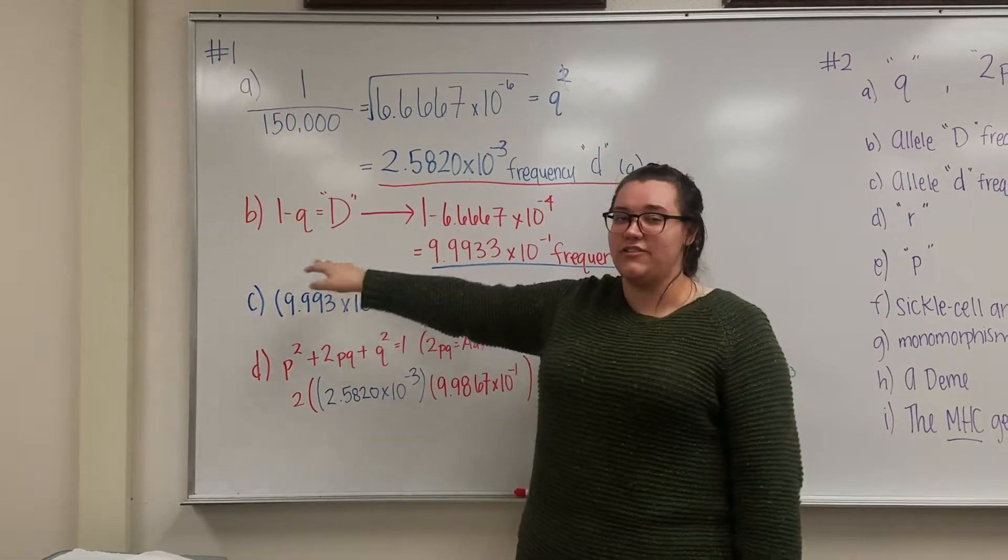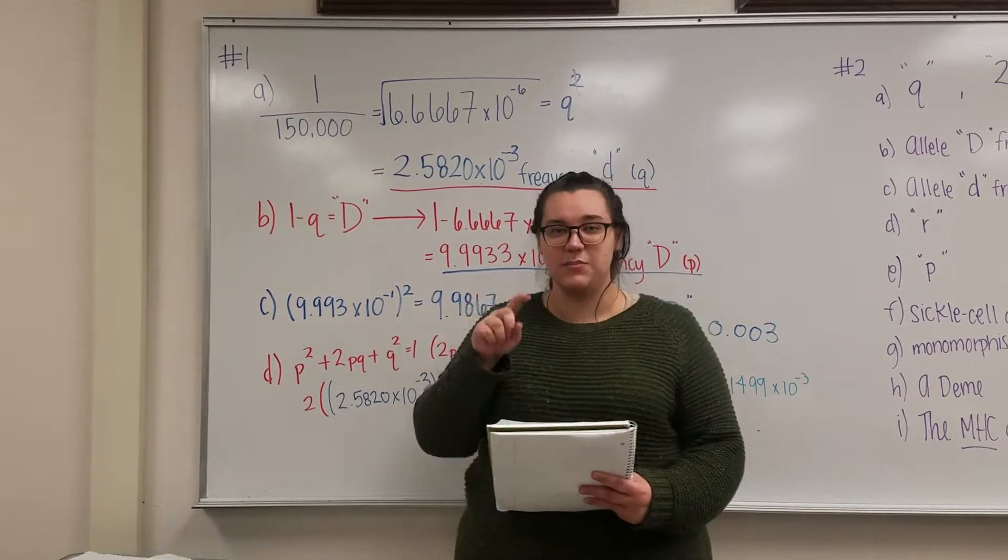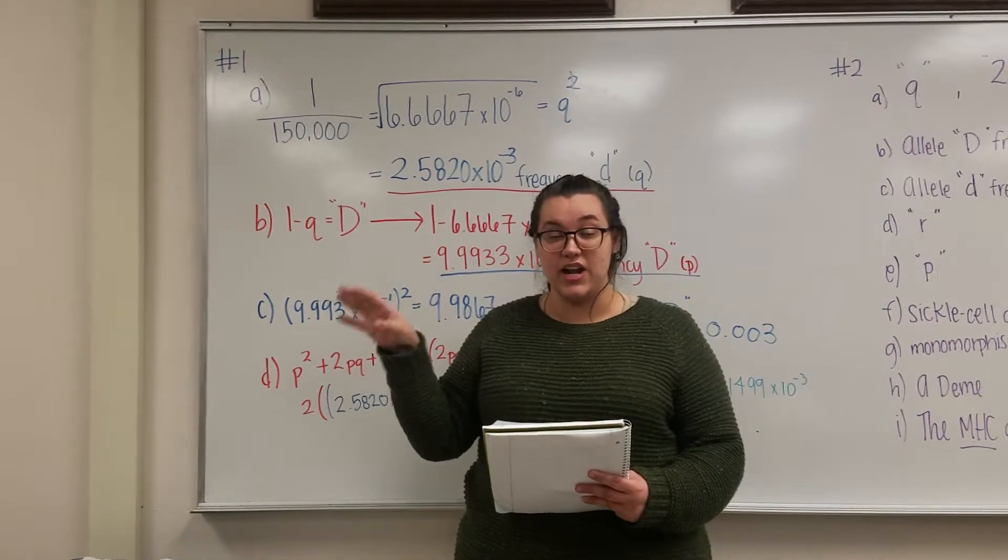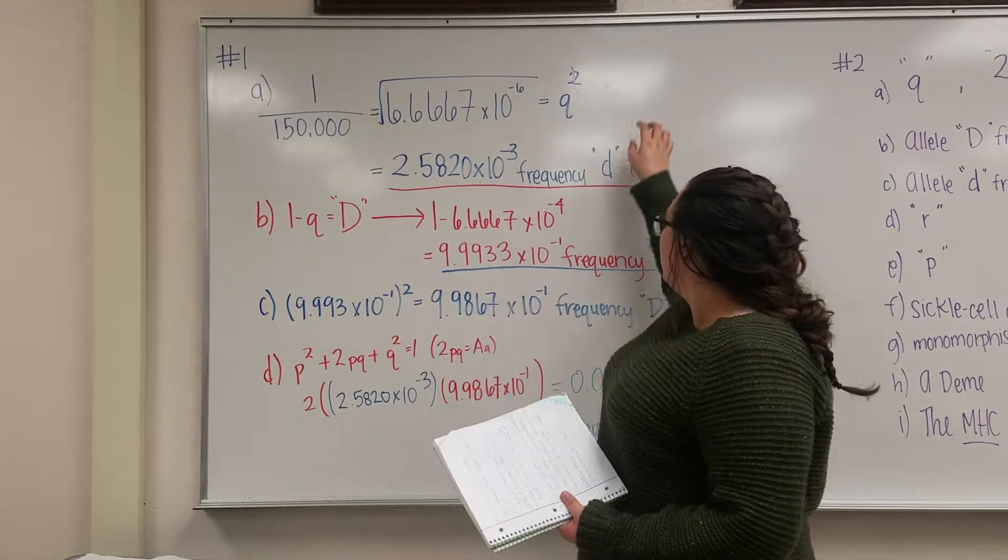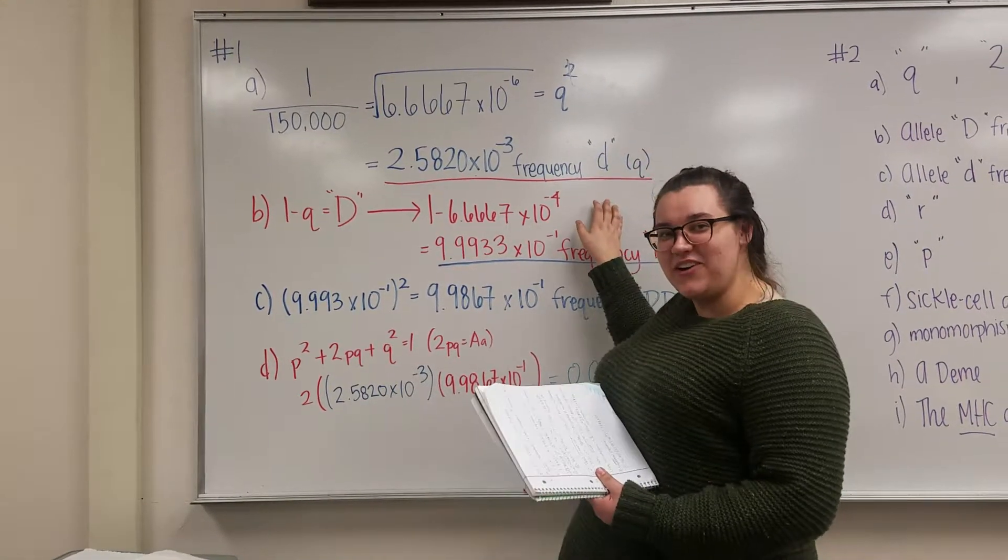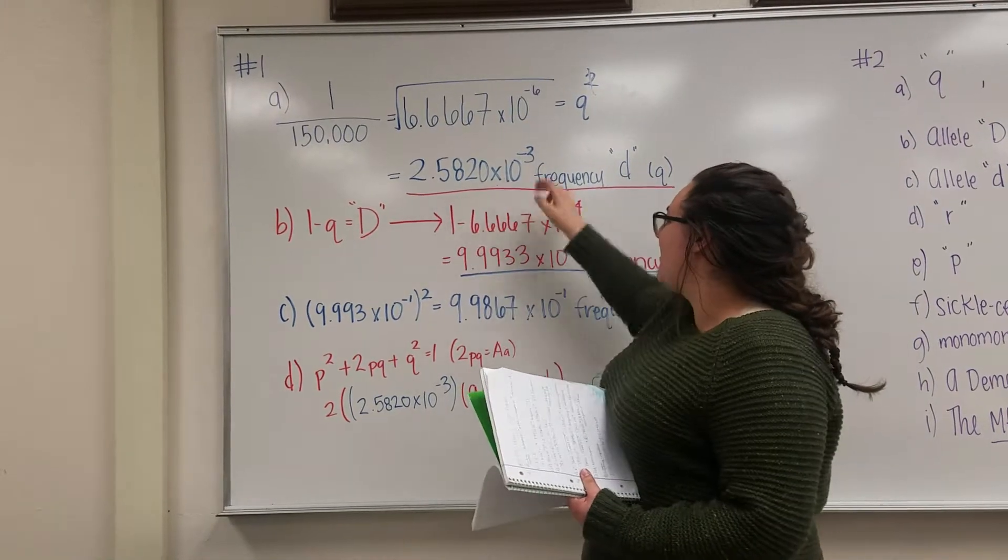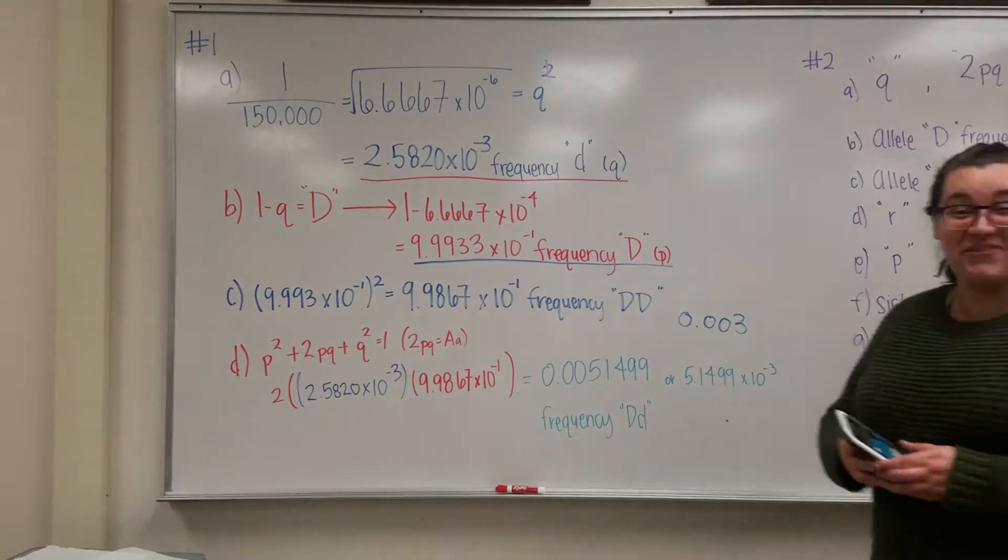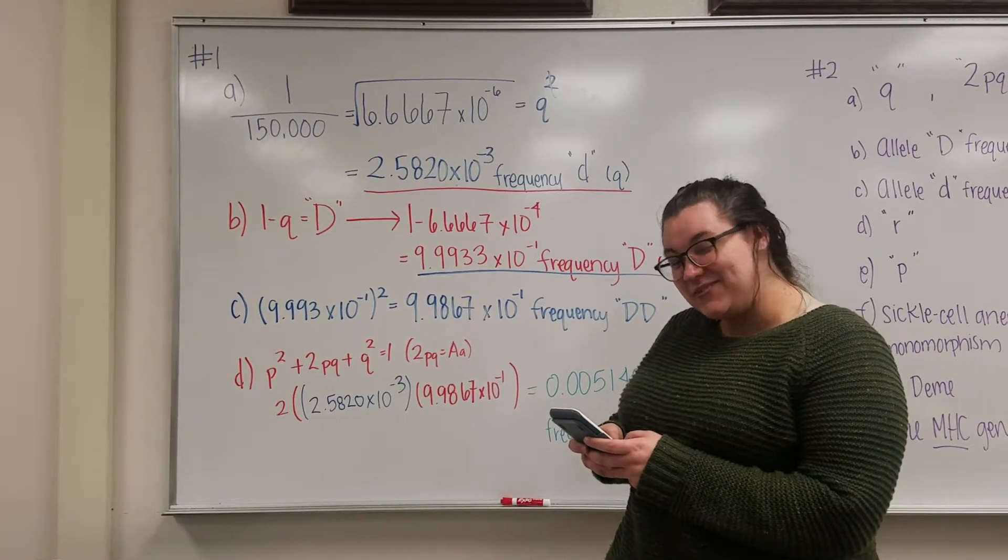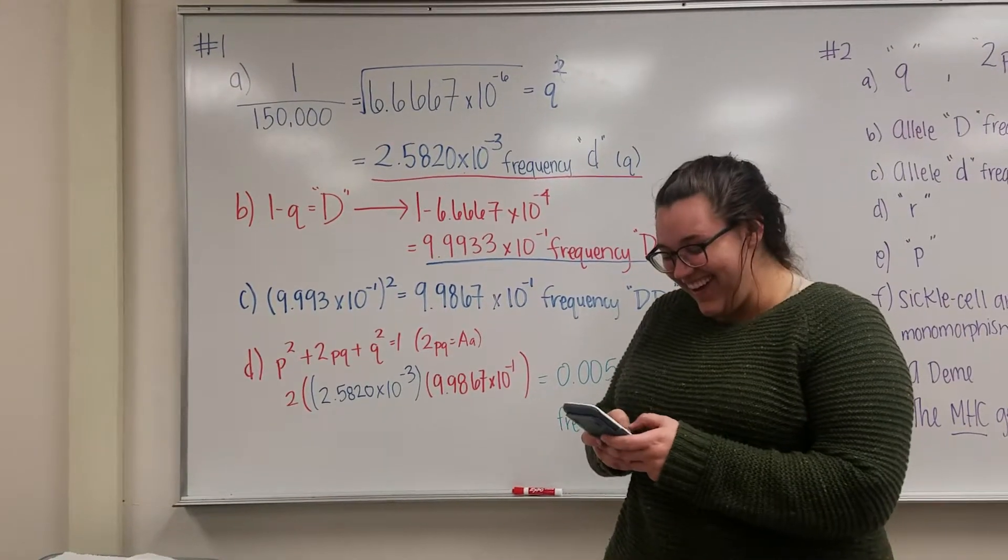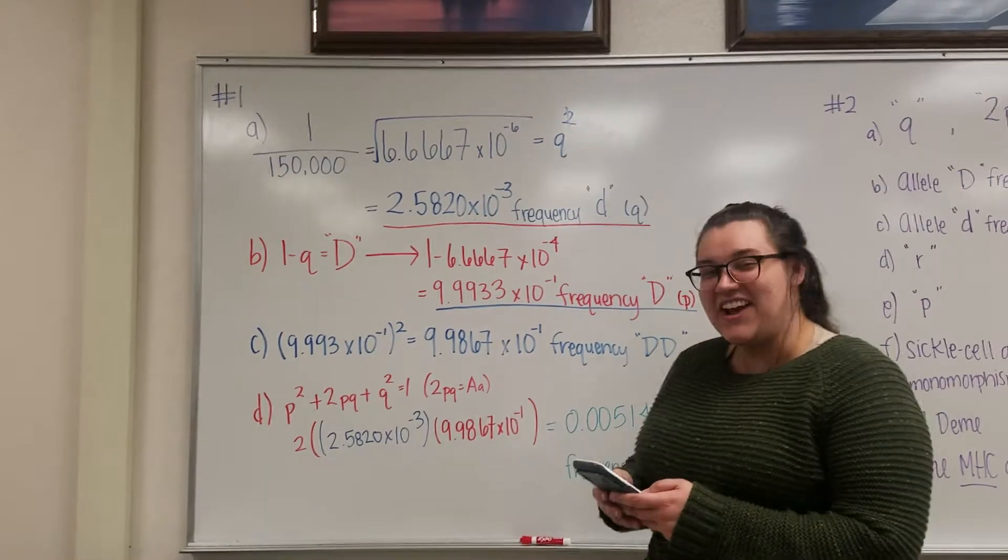For B, because we're looking for the dominant allele, we know that all of the alleles together is equal to 1, because P squared plus 2PQ plus Q squared equals 1. So we know that we're going to do 1 minus whatever we got here. I actually did this wrong. So it would be 1 minus this answer, which is 2.5820 times 10 to the negative 3rd. At least you caught it now. I know, that would have been really bad.